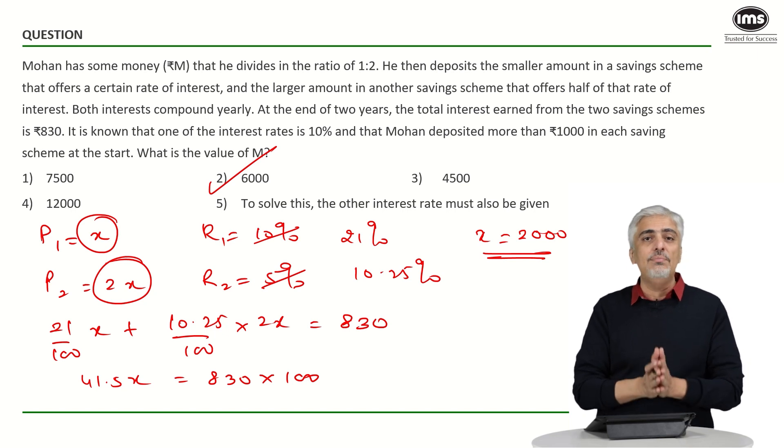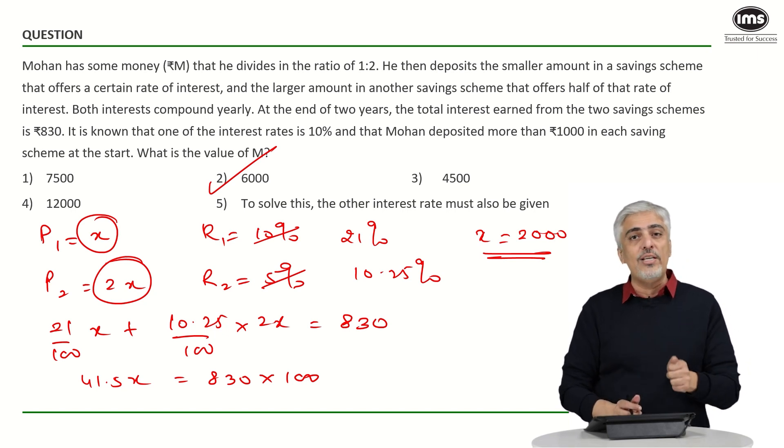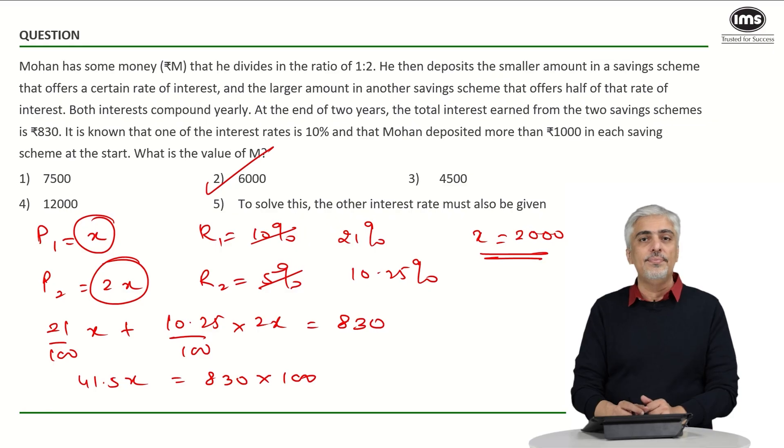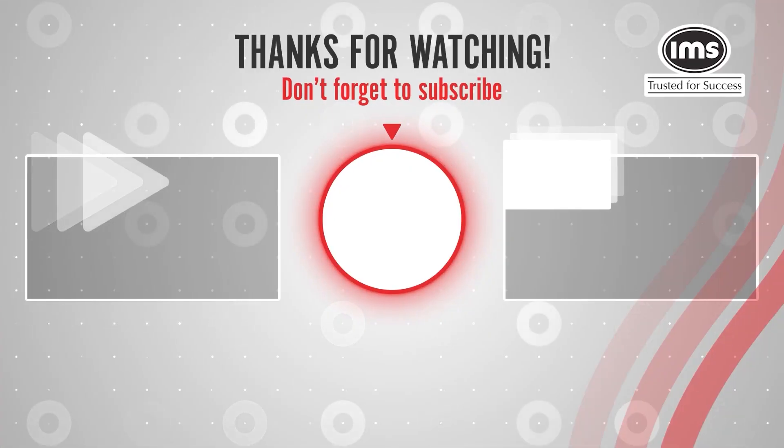Very straightforward sum. As I said if you just tried with values of 1000 and 2000, you get exactly half 415 and that should have been the ideal way to do this question. I'll see you next time.